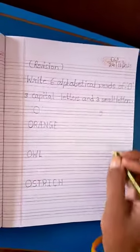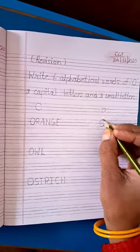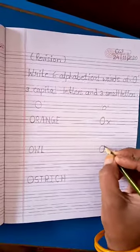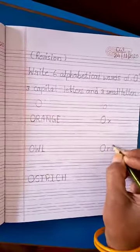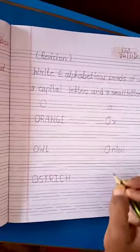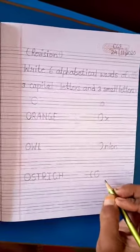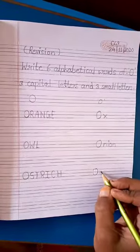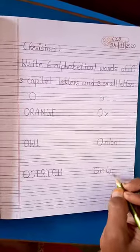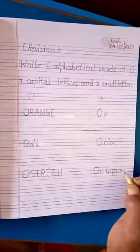Please write small. OX. Ox. ONION. O, N, I, O, N. Onion. OCTOPUS. O, C, T, O, P, U, S. Yes, Octopus.